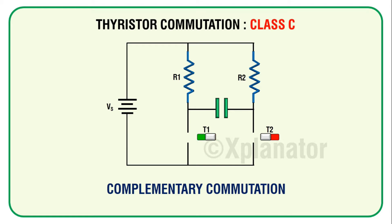Now let's turn on thyristor T1. The current has a path to travel from the battery, through load R1, through the thyristor, and back to the battery. Also, current will flow through the battery, load R2, the capacitor, and back to the battery. With this current, the capacitor gets charged to right-hand side positive and left-hand side negative. When the capacitor charges to battery voltage, the current will stop flowing in the second section. So now thyristor T1 is carrying load current and the capacitor is completely charged. We will call this capacitor voltage Vs.